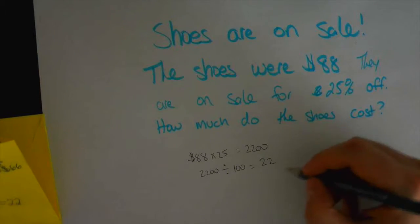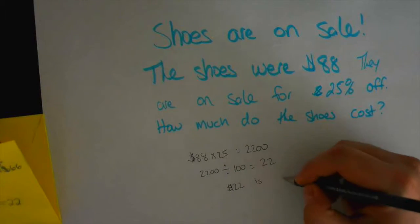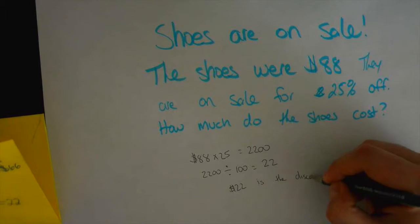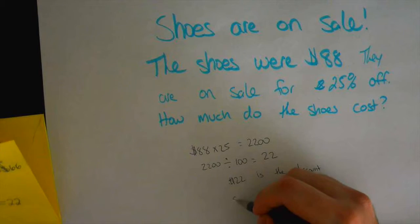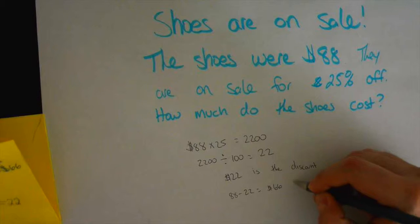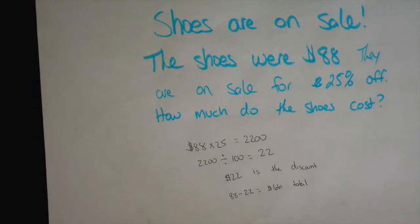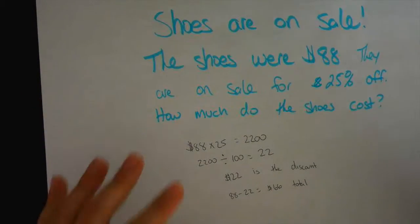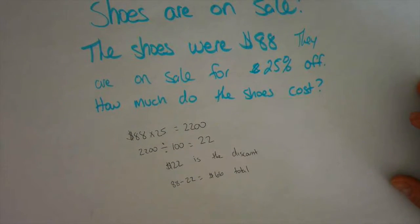And then $22, you know, that was how much those shoes are going to be off. So $22 is the discount. So we did $88, and we took $22 out of it, and we got $66, and the total of the sale was $66. So the shoes will cost $66. Great job, by the way. Let's show what concept she used here is very similar to a concept that we learned a couple days ago called cross-multiplying.